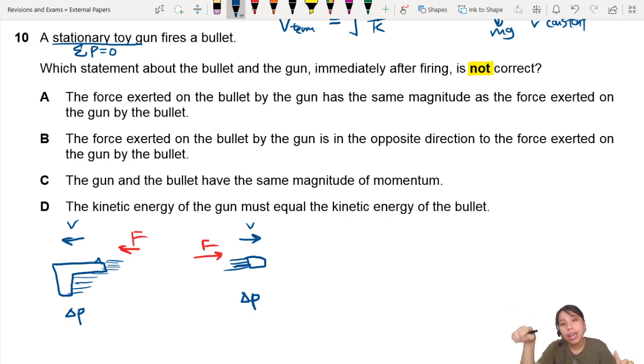One of the red F. Has the same magnitude as the force exerted on the gun by the bullet. So we're just talking about the two red forces. The keyword is same magnitude. Hmm, sounds good. This is Newton's third law. Equal opposite direction. Equal. Same magnitude. Okay, I think it's okay.